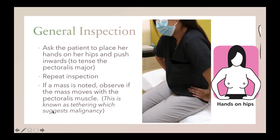Next, ask your patient to place her hands on her hips and push inwards to tense the pectoralis major. Then repeat the inspection, noting for any obvious masses, swelling or scars, skin changes, nipple changes, or asymmetry. If a mass is noted, observe if the mass moves with the pectoralis muscle — this is known as tethering, which suggests malignancy.